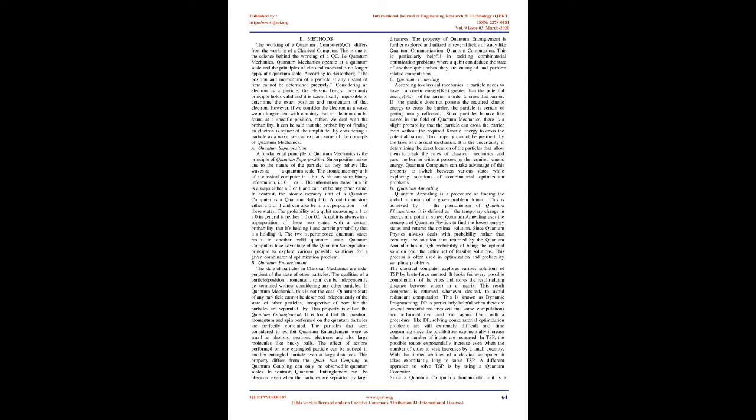The working of a quantum computer differs from the working of a classical computer due to the science behind it, i.e., quantum mechanics. Quantum mechanics operate at a quantum scale and the principles of classical mechanics no longer apply. According to Heisenberg, the position and momentum of a particle at any instant of time cannot be determined precisely. Considering an electron as a particle, the Heisenberg uncertainty principle holds valid and it is scientifically impossible to determine the exact position and momentum of that electron. However, if we consider the electron as a wave, we deal with probability — the probability of finding an electron is the square of the amplitude.